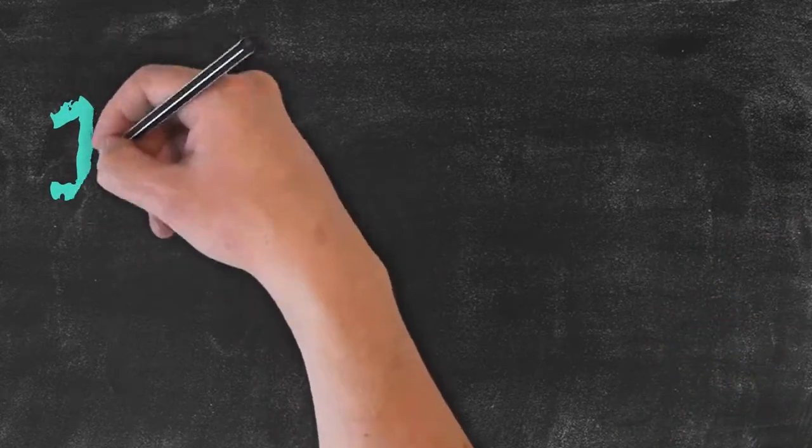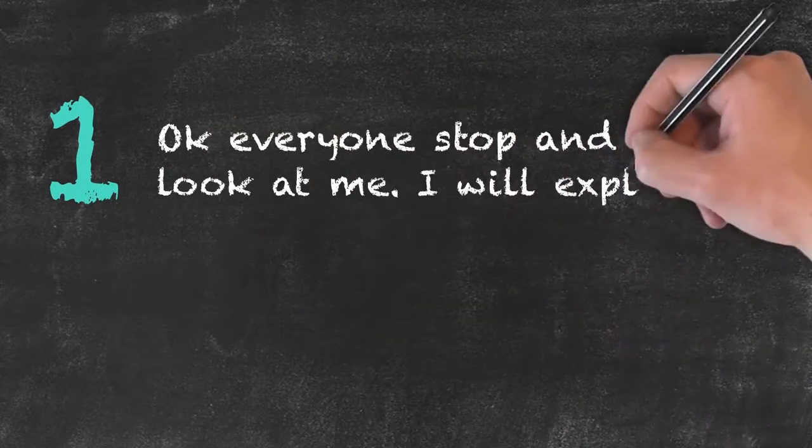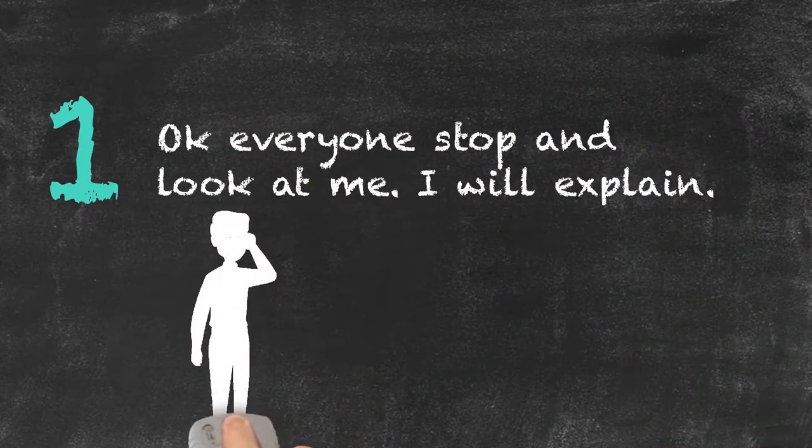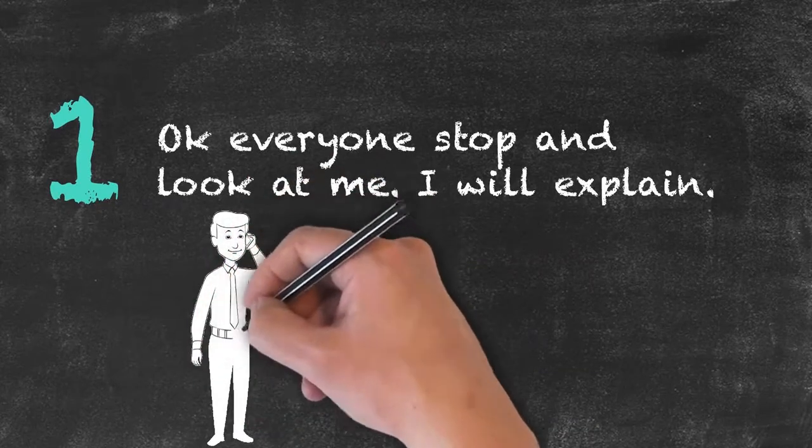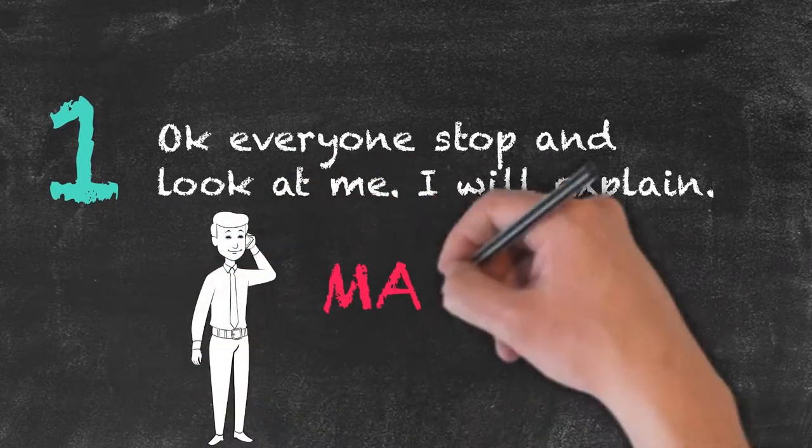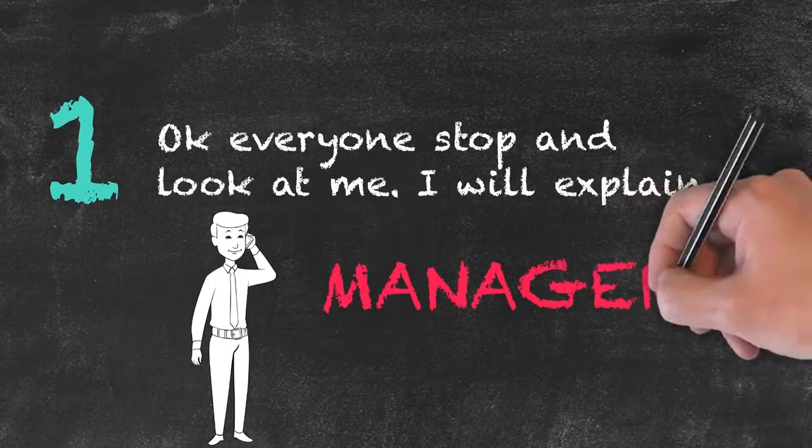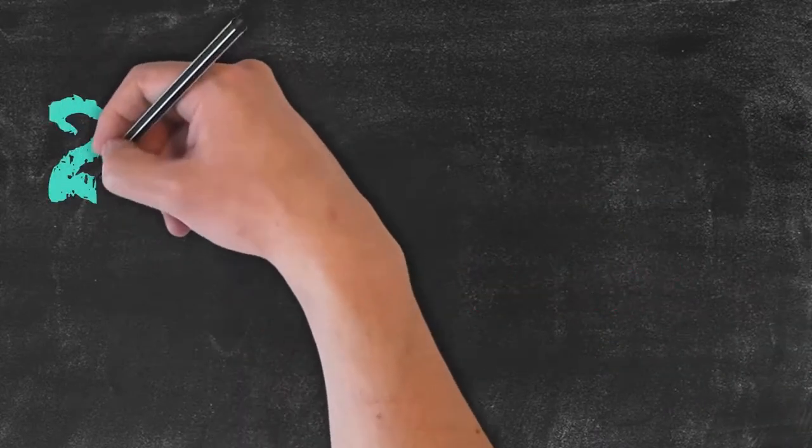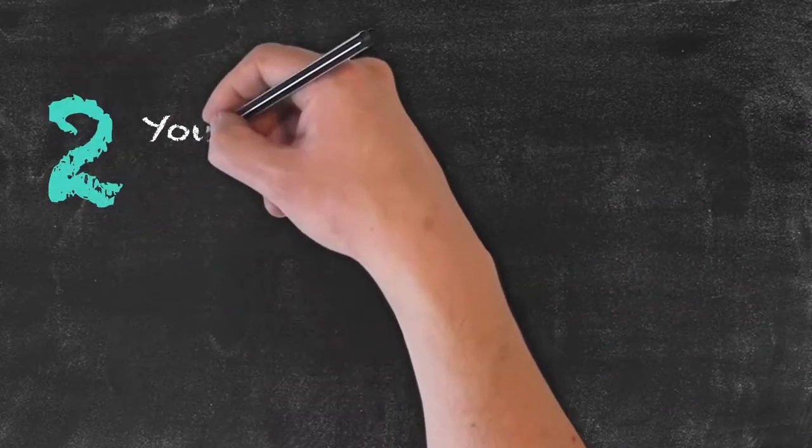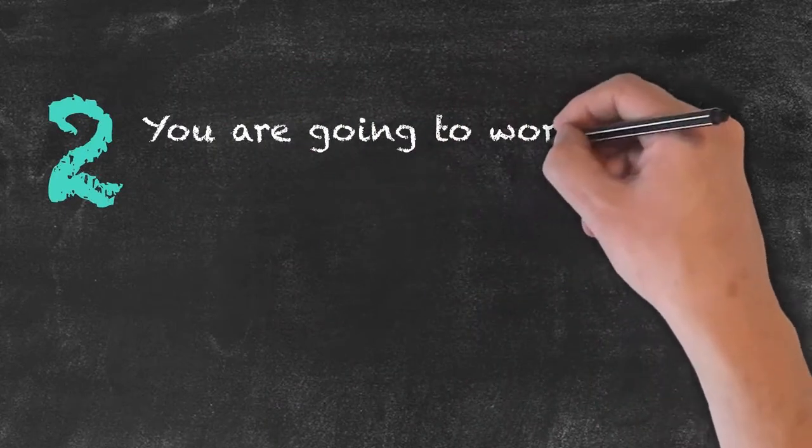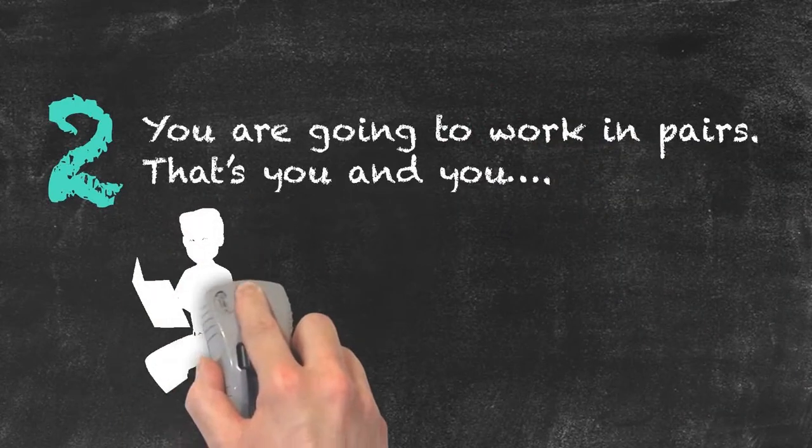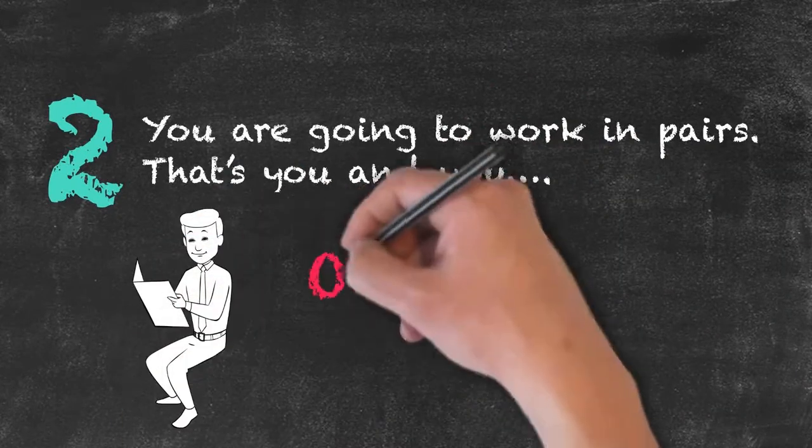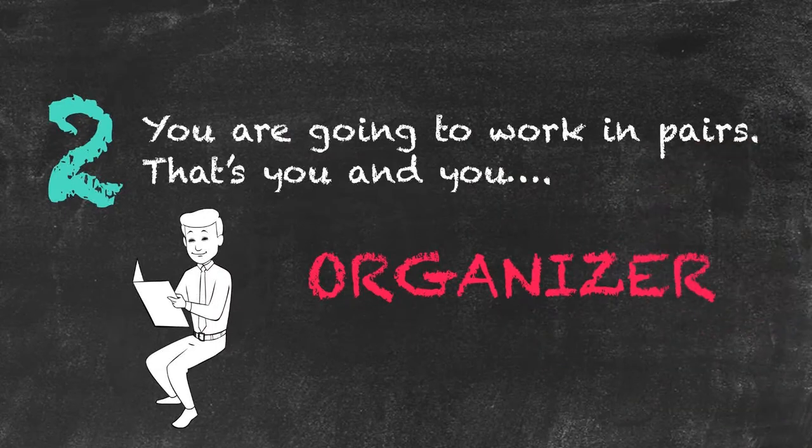So the teacher may say, for example, 'Okay everyone, stop and look at me and I will explain,' and the role of the teacher at that particular time is that of a manager. So the teacher is actually managing what is going on in the classroom. Second thing that they might say, 'Okay, you're going to work in pairs,' and so on. So what the teacher is doing at this stage is actually acting as an organizer.